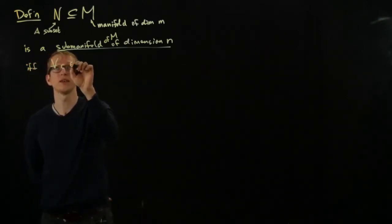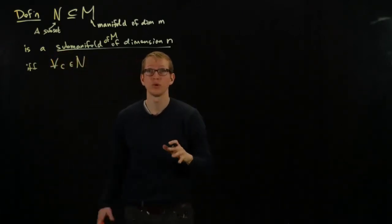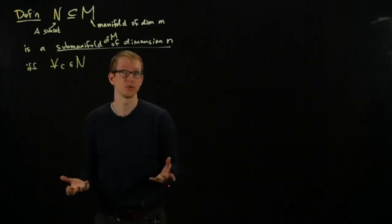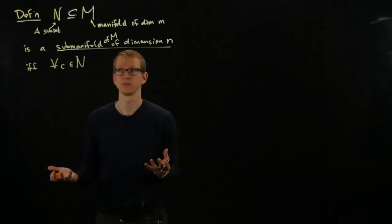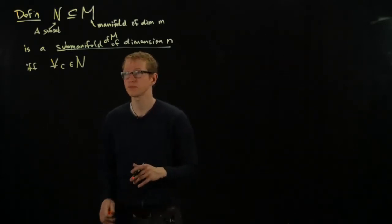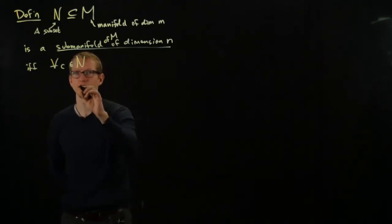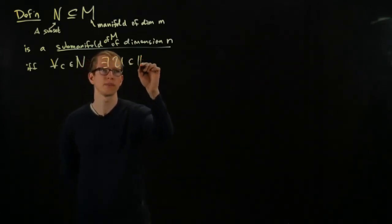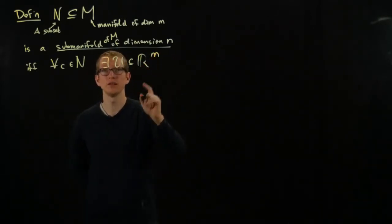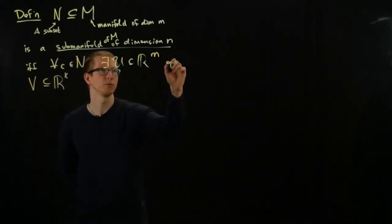If and only if, for all points C in N, I can find, so as you might have guessed, we want to find an open neighborhood such that locally, this subset looks like a subset of Euclidean space of that same dimension. That's definitely part of the definition. But we also have to include the fact that M is a manifold. And one way to get rid of a lot of potential complications is to just say that there exists an open set U in RM, an open set V in RK. Sorry, but these are open. Let me write this out explicitly.